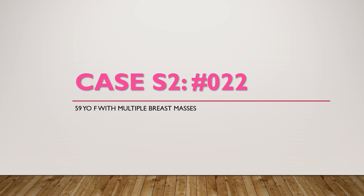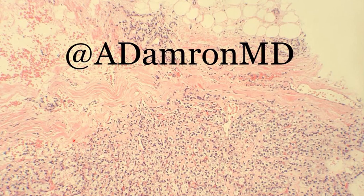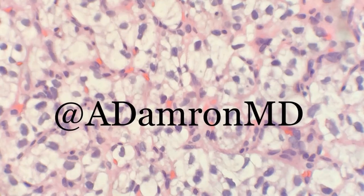Moving on to our final case of season two: a 59-year-old female with multiple breast masses. We have solid sheets on low power infiltrating into the breast tissue. It actually has a pretty well-delineated border, and these cells have relatively monomorphic nuclei with very cleared-out cytoplasm. I'm also seeing a lot of red blood cells in this very delicate vascularity to this lesion. Looking a little closer, you can see this very clear cytoplasm and what is described as a chicken wire vasculature throughout this lesion. The nuclei themselves are not terribly pleomorphic, but clearly this is neoplastic.